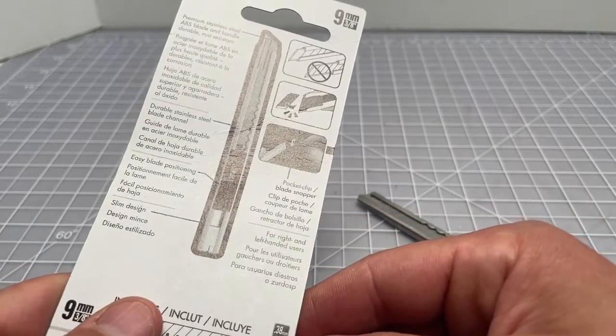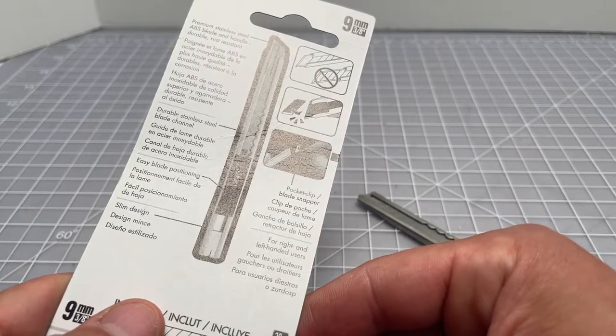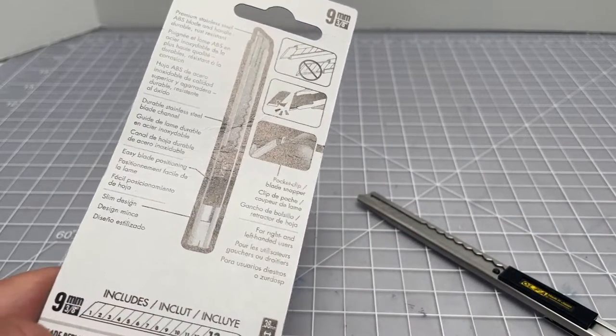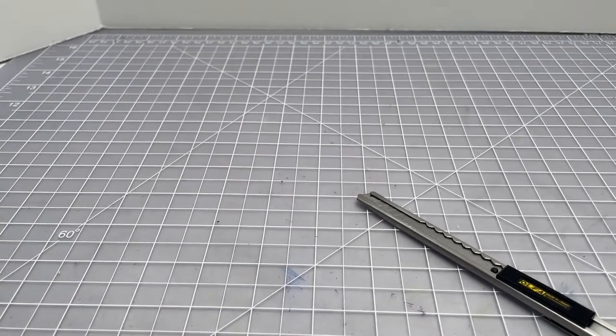The instructions on it are actually really limited, so I want to do a quick video about how you change the blade and then how you snap off the blade when the end has dulled.